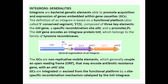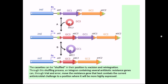All of these parts are under one promoter called Pc, placed right after the intI gene. Gene cassettes are integrated or excised from the functional platform by a site-specific recombination mechanism catalyzed by the integrase enzyme intI. Looking at this picture, the gene cassette can be shuffled in position by excision and reintegration. In this case, gene cassette gc3 enters via the attI site and embeds itself between the attI and attC sites, giving us a larger integron with three gene cassettes.